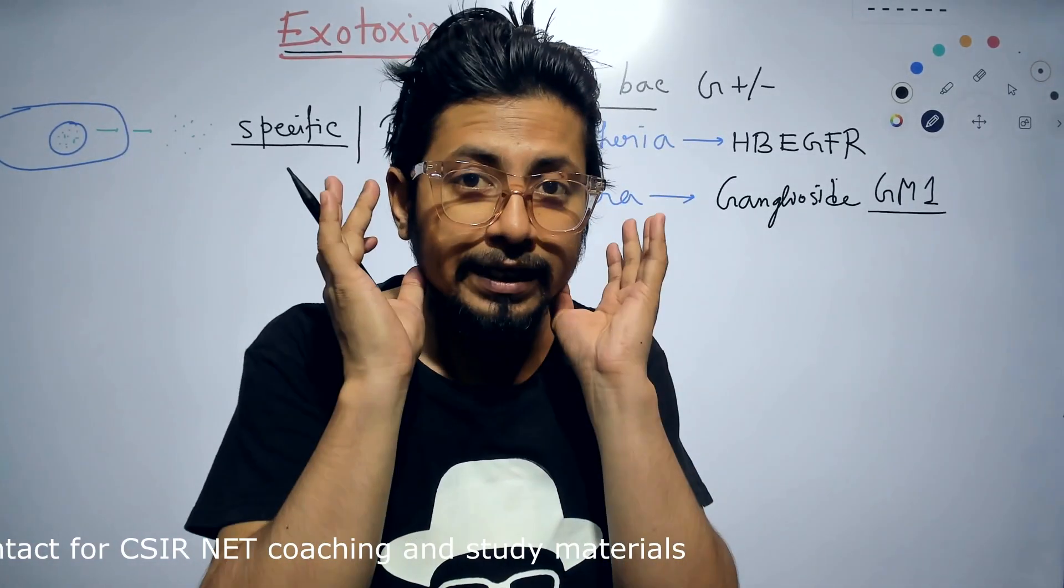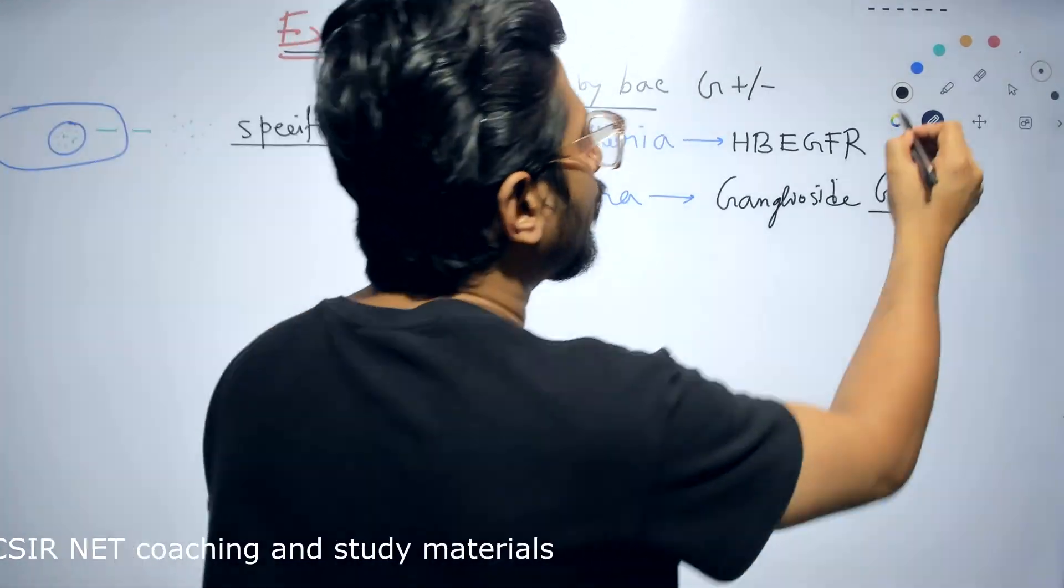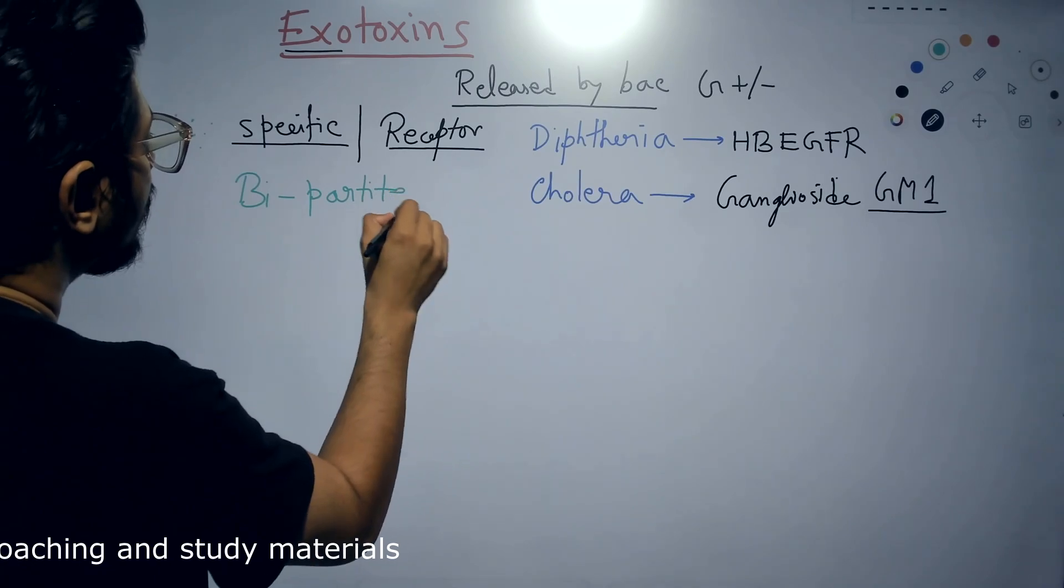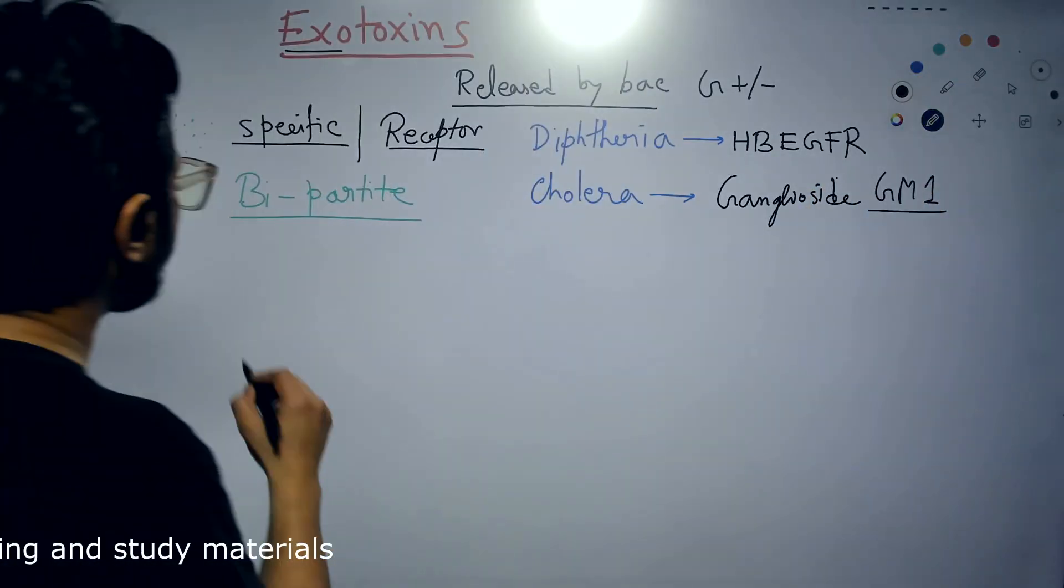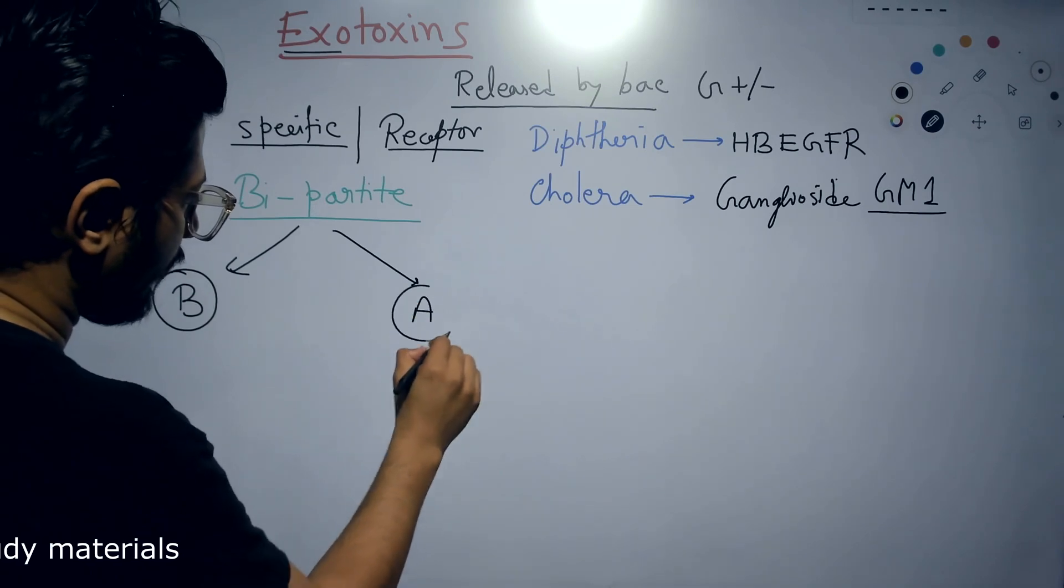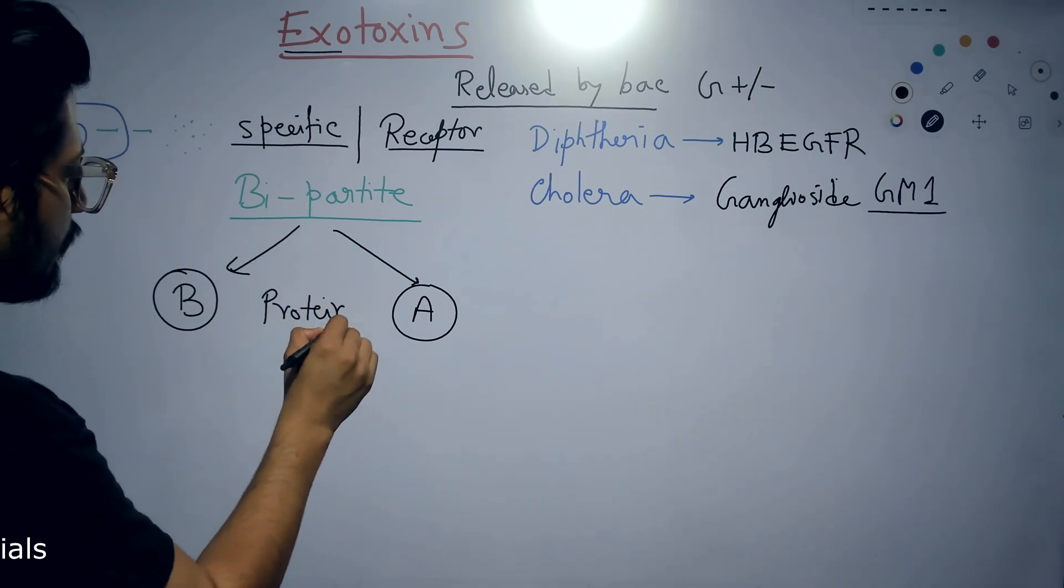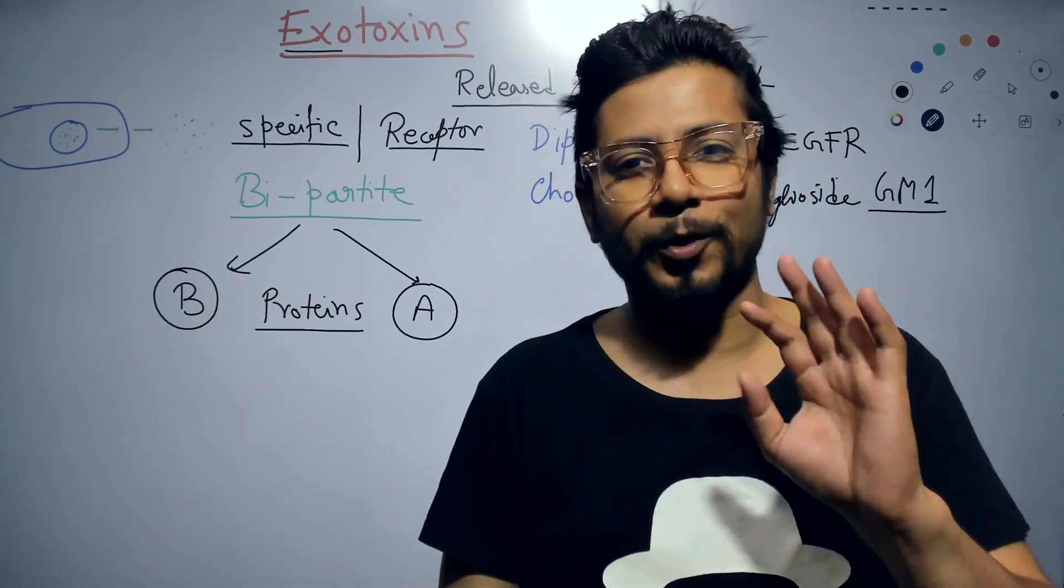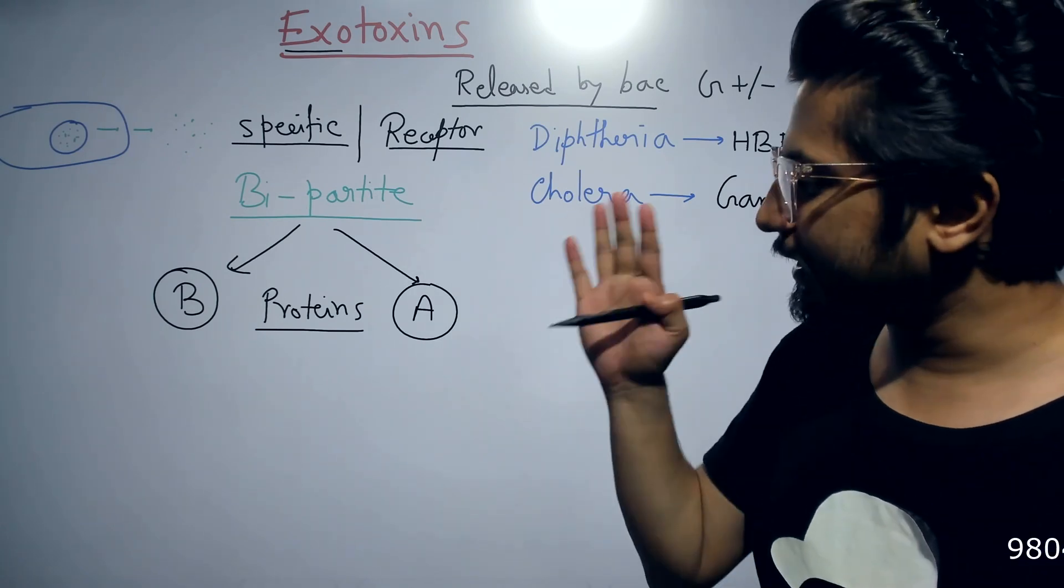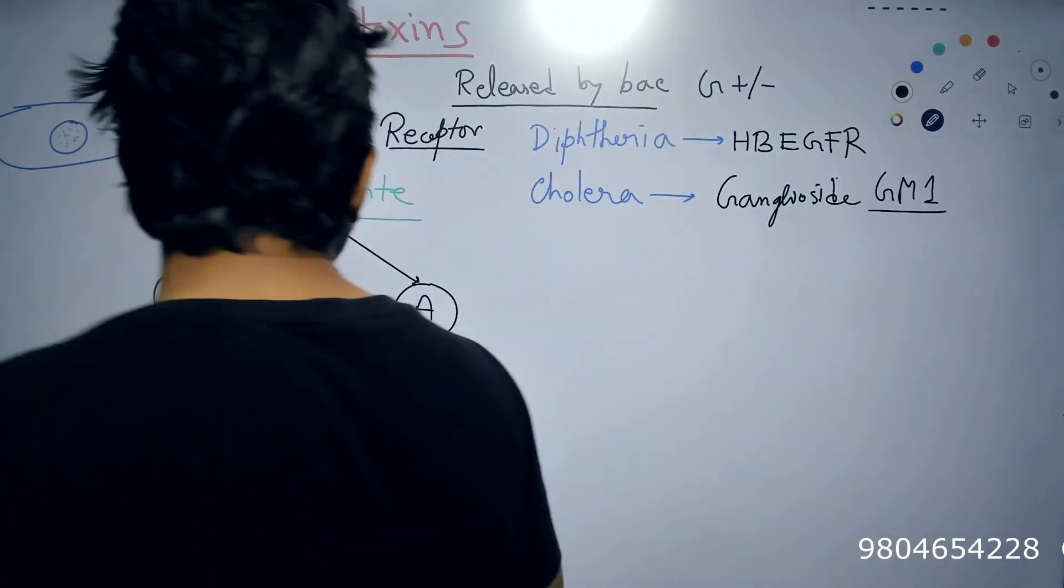these exotoxins have specificity of their receptor binding because they carry two parts to it. So these exotoxins are often referred to as bipartite toxin. Why? Because it has two components to it. Bi means two components. One is the B component, another one is the A component. Both these components are made with proteins. So the major constituent of an exotoxin is protein, while the constituent of endotoxin was lipid and polysaccharide. But in case of exotoxins, solely made with proteins. Both B and A subunits are made with proteins.